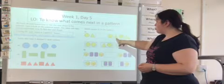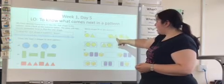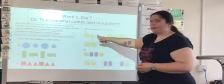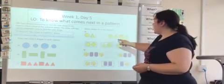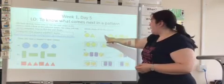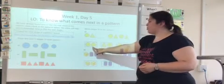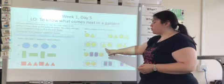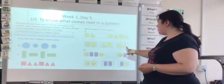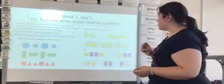And it goes circle, triangle, circle, triangle. So which shape comes after the triangle? The circle. So we need to make sure we have the circle first. Then what comes after the circle? The triangle. So we're looking for a circle and a triangle. So the circle, that's not a triangle, so it's not that one. Oh, that's not a circle at the beginning, so it's not that one. Circle, and then the next one is a triangle. Yes, that is the correct one to put in our missing space.